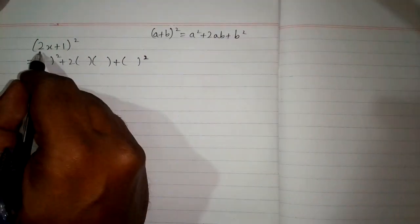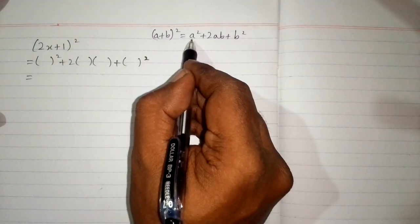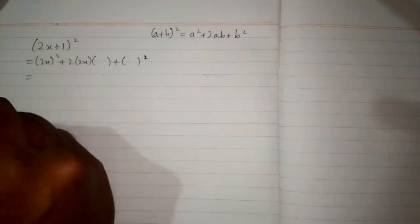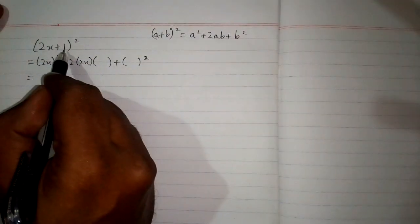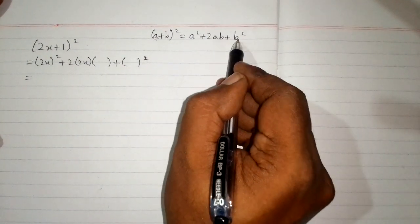Now we have 2x in place of a, so we will put 2x in place of each a. We will write 2x here and then 1 in place of b here and here.